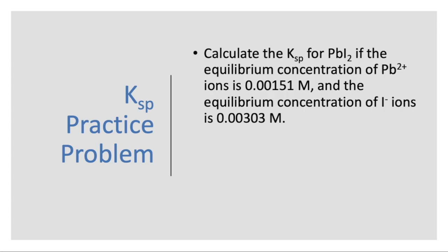In this lab, you'll be calculating the KSP for calcium hydroxide, but I'm going to show you an example of how you would do this if you were calculating the KSP for lead to iodide, PbI2. And this is when you know the equilibrium concentration of lead ions and of iodide ions.